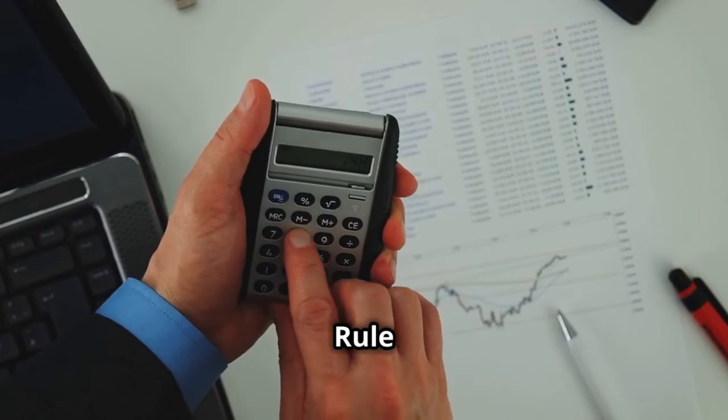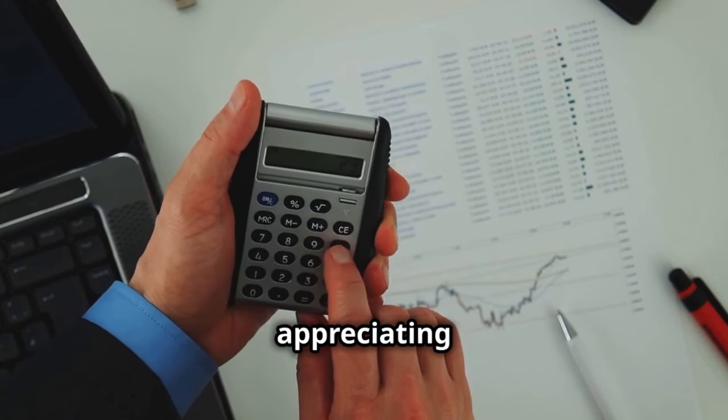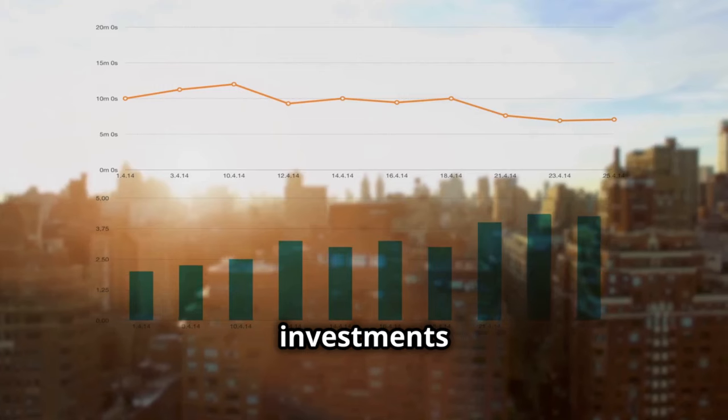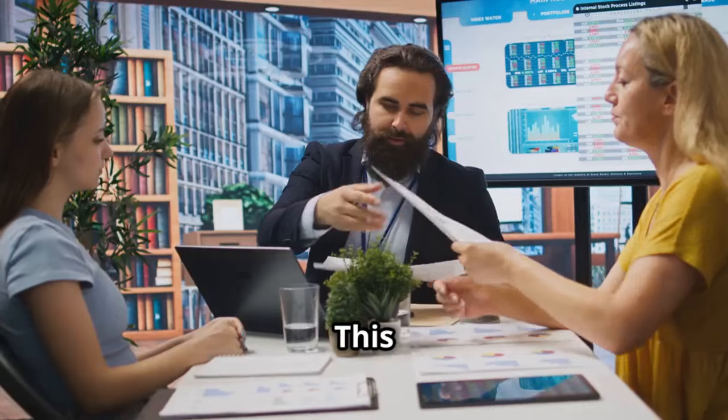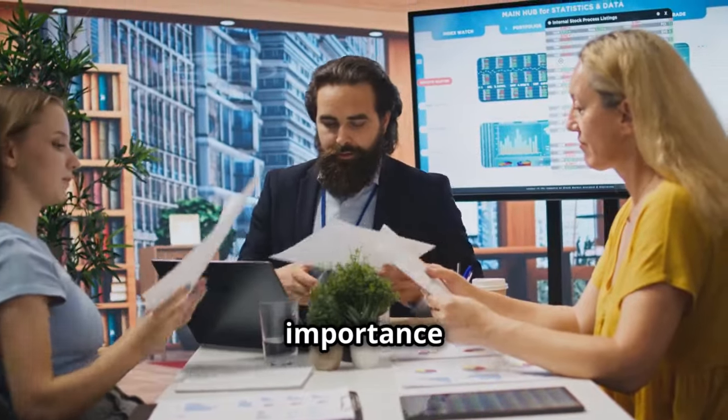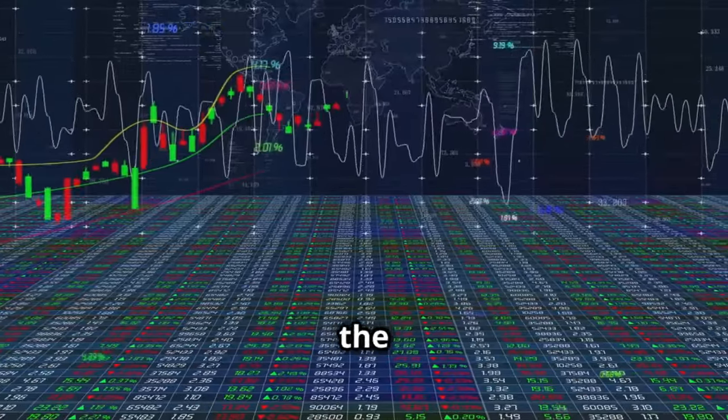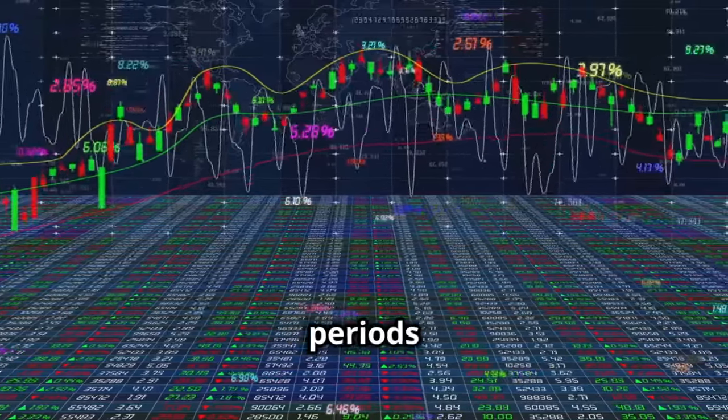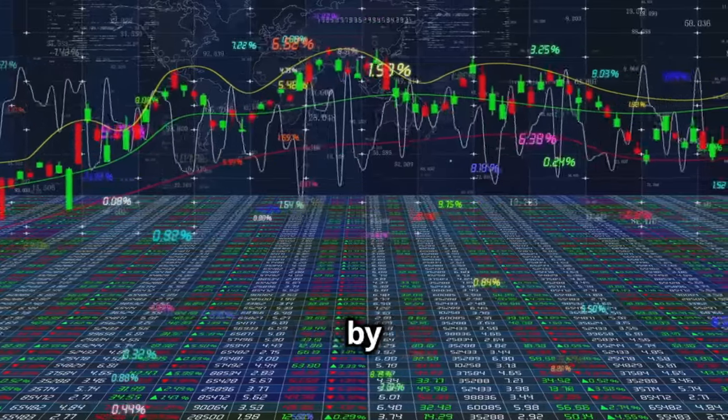Understanding the rule of 72 isn't just about calculating growth. It's about appreciating the power of compounding. The longer your investments grow at a steady rate, the more exponential the results become. This principle underscores the importance of patience and consistent investing. Historical data from the S&P 500 illustrates how even turbulent economic periods haven't derailed the overall doubling pattern predicted by the rule of 72.